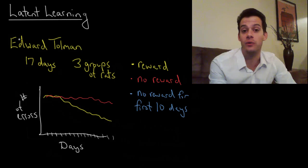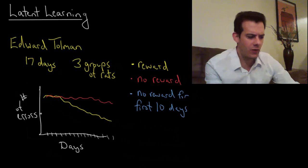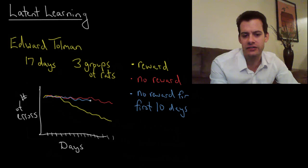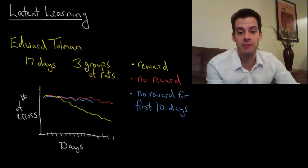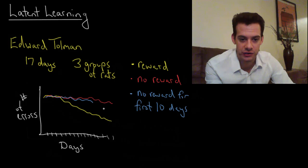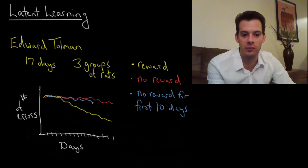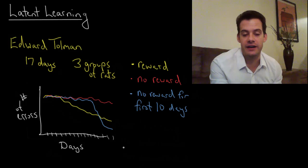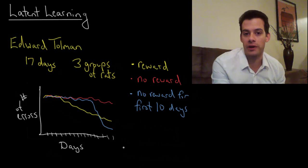But the interesting part comes with the third group. Just like the others when they're first put in the maze they're wandering around, but then after 10 days they start learning. You might think that they would gradually decrease just like the first group, but Tolman and Honzik found this group of rats suddenly started performing by the end of the study even better than the group that was rewarded all along.